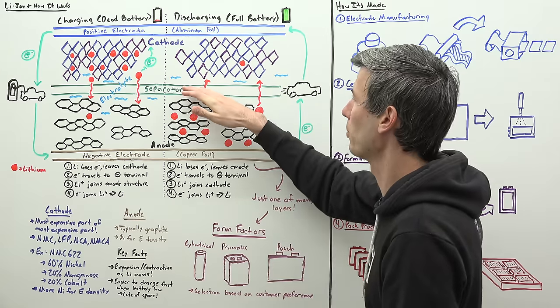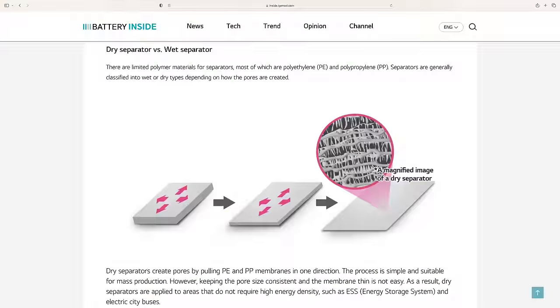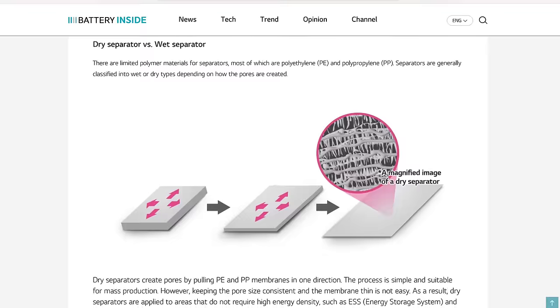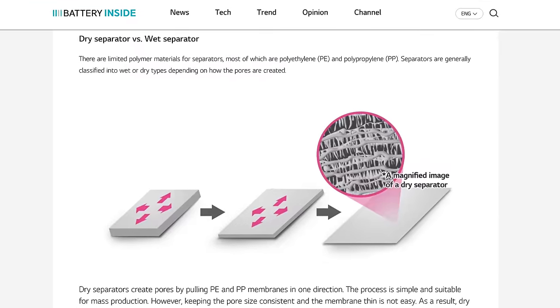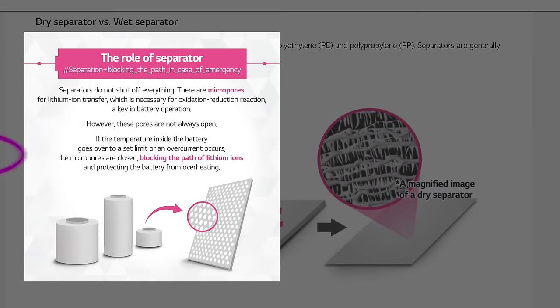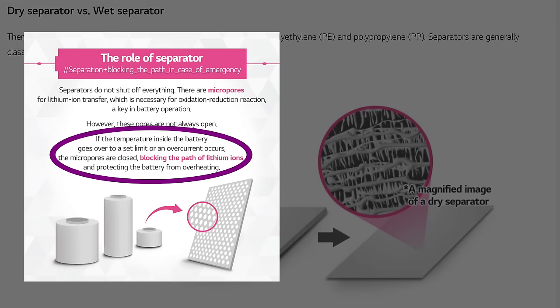Finally, we have the separator, which prevents the positive side and the negative side from touching. This separator has micro pores in it which allow for lithium ions to flow between the anode and cathode. But interestingly, the pores aren't actually always open. If the battery starts to get too hot, the pores can close, protecting the battery from overheating.